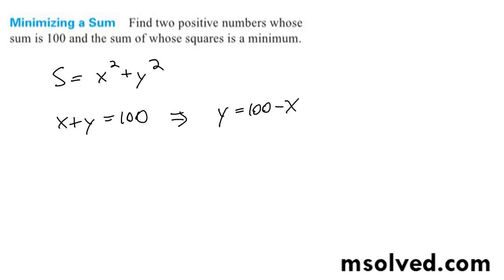So we can substitute this back into the original equation. We get x squared plus, substitute this in for y, 100 minus x squared is equal to S.